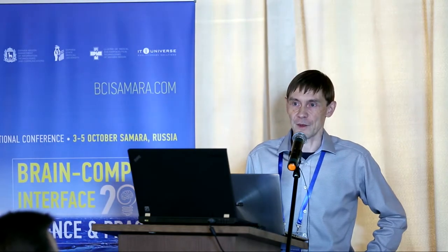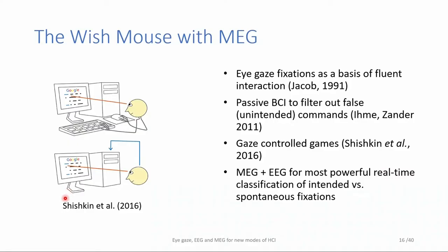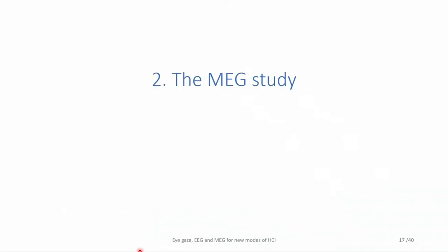We are now thinking about how to use other brain signals — especially MEG — together with the E-wave, and then we can combine all these principles: gaze fixation as the basis of fluent interaction, Sander's proposal to use passive BCI to filter out false gaze commands, gaze-controlled games, and now also MEG.